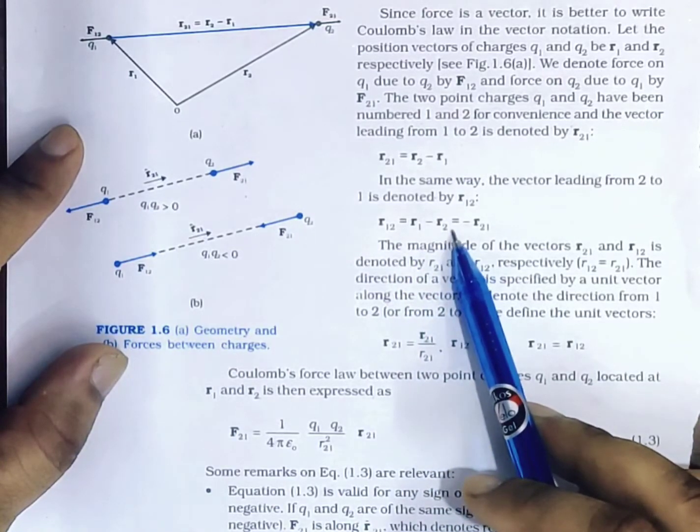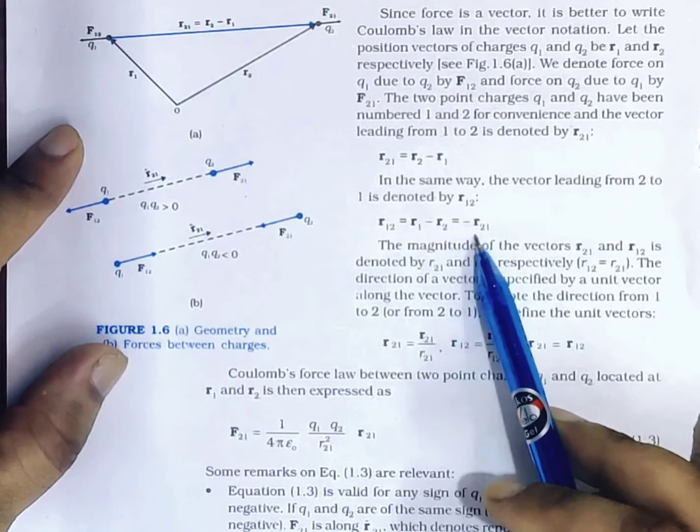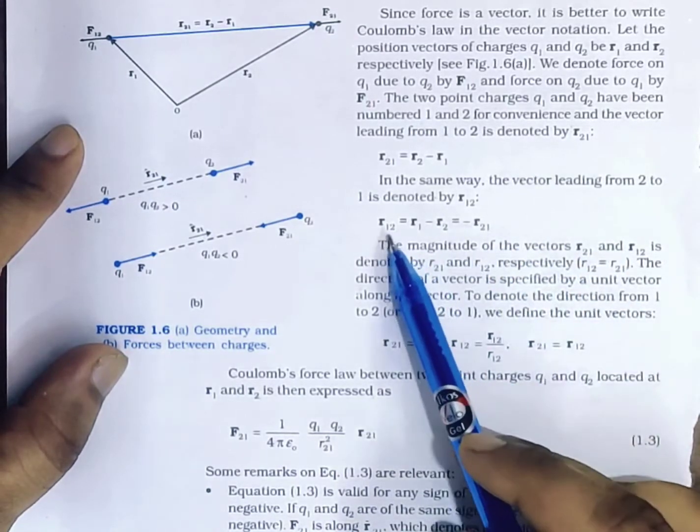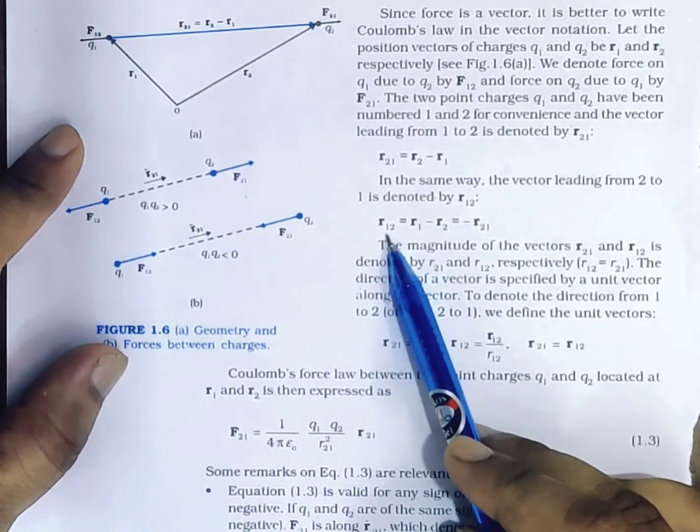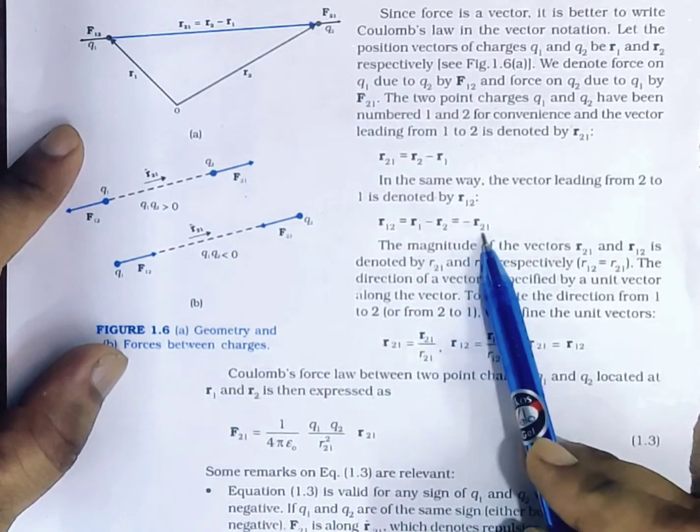R12 equals negative of vector R21. So remember that vector R12 is negative of vector R21.